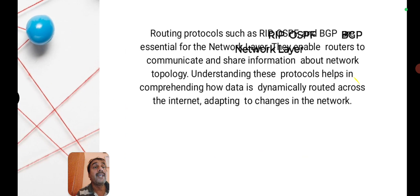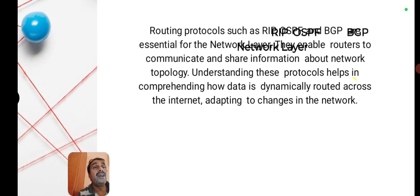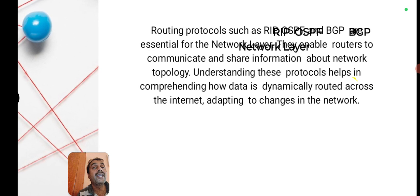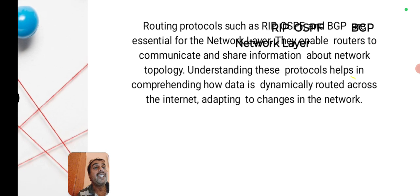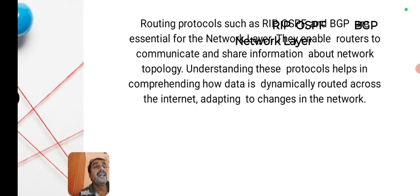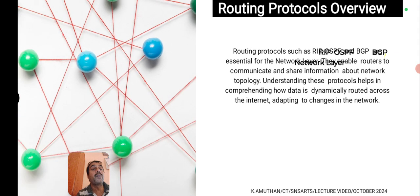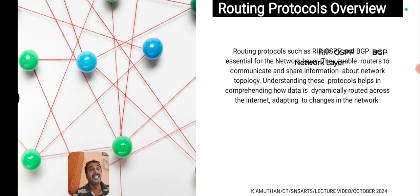Routing protocols such as RIP, OSPF, and BGP are essential for the network layer. They enable routers to communicate and share information about the network topology. Understanding these protocols helps in comprehending how data is dynamically routed across the network and how the network adapts to changes.